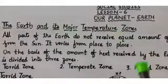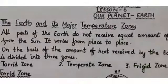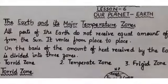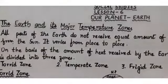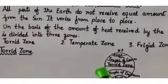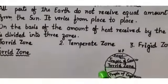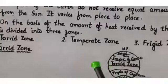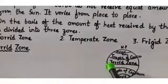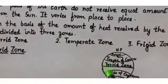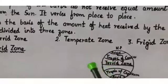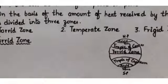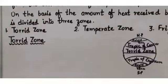The heat varies from place to place. In some places, the Earth gets direct heat from the sun; in other places, it receives slanting heat. The amount of heat received decreases as we move from the equator — which gets direct heat — towards the poles, where the heat from the sun decreases.